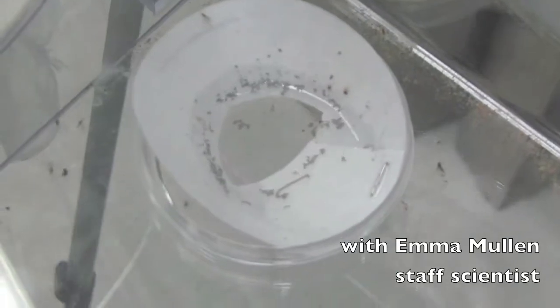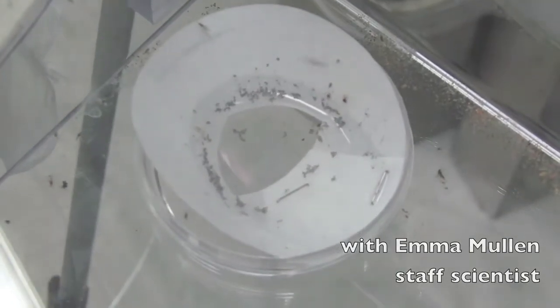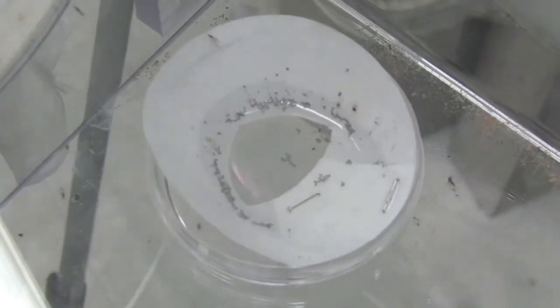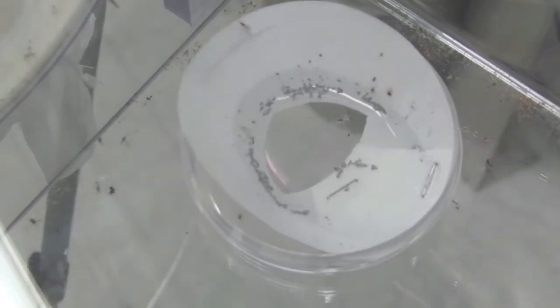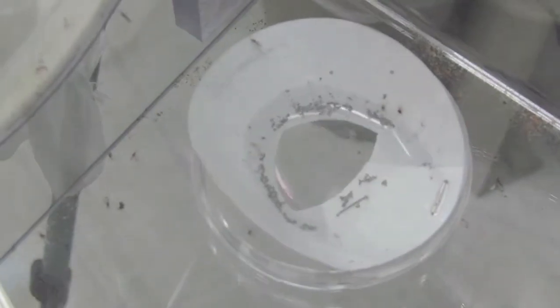All right, so these are the eggs that the mosquitoes lay after they blood feed. They use the proteins from the blood to develop their eggs, and they lay their eggs in their water dish as you see here.